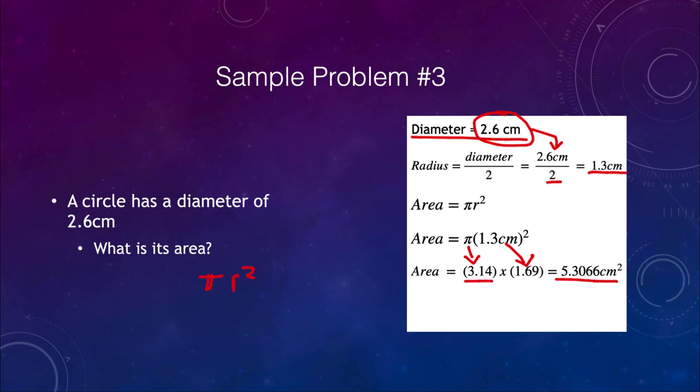But since our final answer is going to only have two significant figures, using three for pi was quite sufficient. Therefore, our final answer must have two significant figures, which means that the area would be 5.3 square centimeters. So a circle with a diameter of 2.6 centimeters would have an area of 5.3 square centimeters.